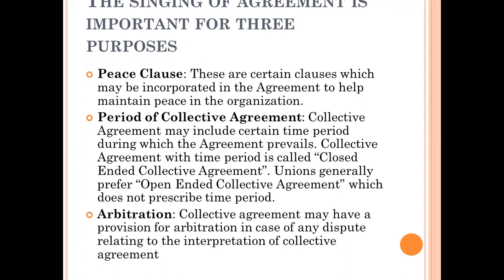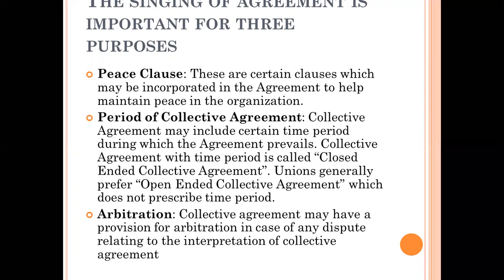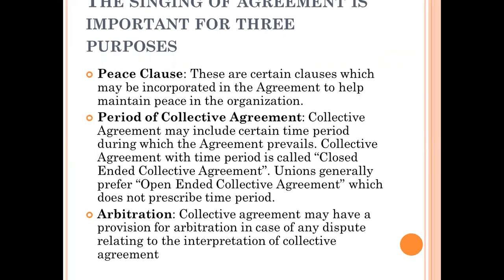Second, there is the period of the collective agreement. This agreement will be valid for a particular period of time. Agreements which have a time period are called closed-ended collective agreements, and agreements which do not have a time period are called open-ended collective agreements. Third, it is arbitration. Arbitration is very important because the collective bargaining agreement may have a provision for arbitration. In case of any dispute relating to the interpretation of the collective bargaining agreement, that can be taken to court for legal discussion. So because of these three reasons — the peace clause, the period of validity, and the arbitration provision — the signing of the collective agreement is very important.